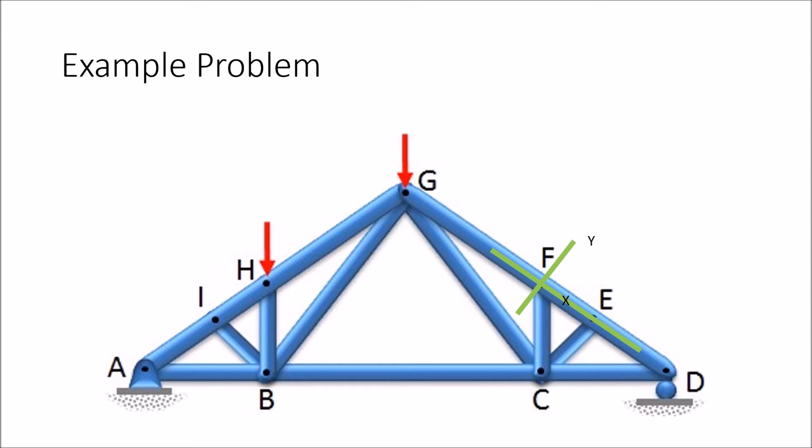Now when we look at corner E, we can do the same logic deduction. We have components of CE in the Y direction and in the X direction, but since there is nothing else in the Y direction to cancel it out, CE must equal zero.